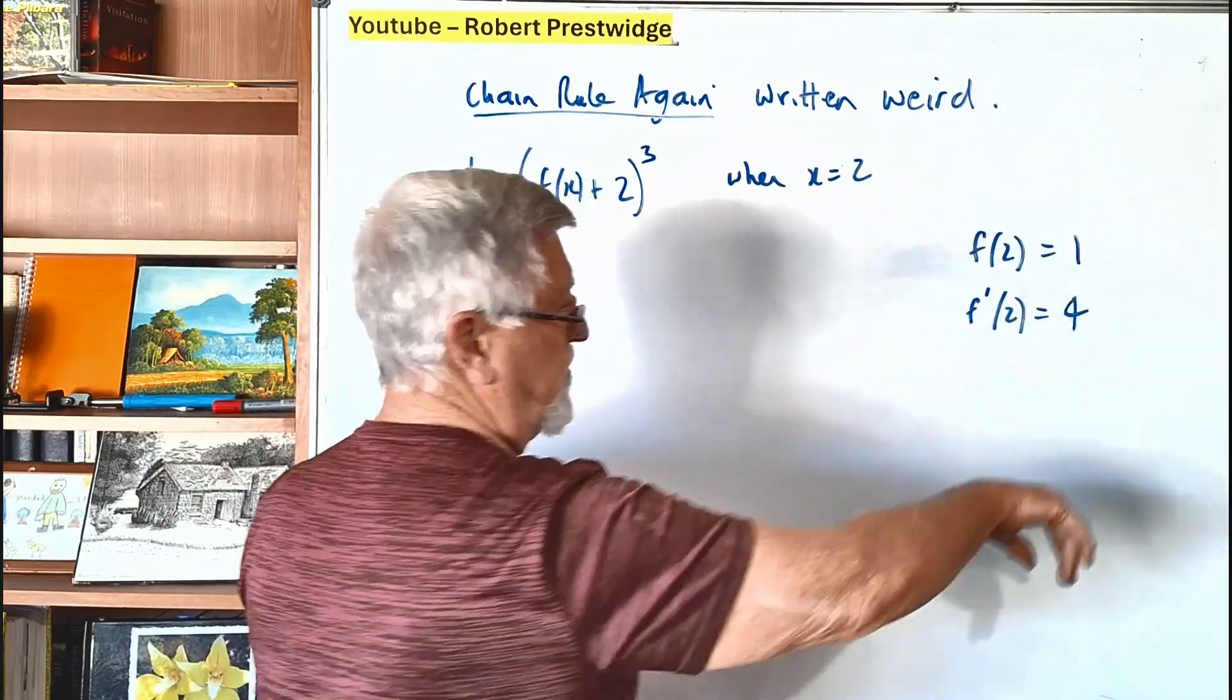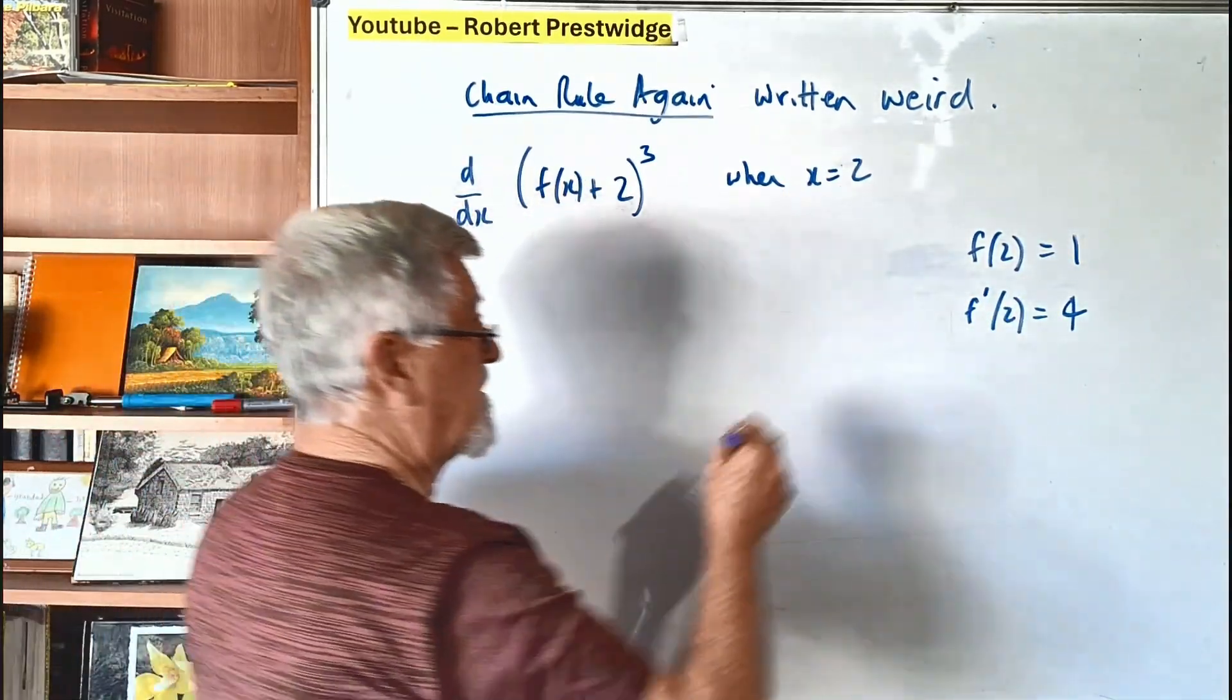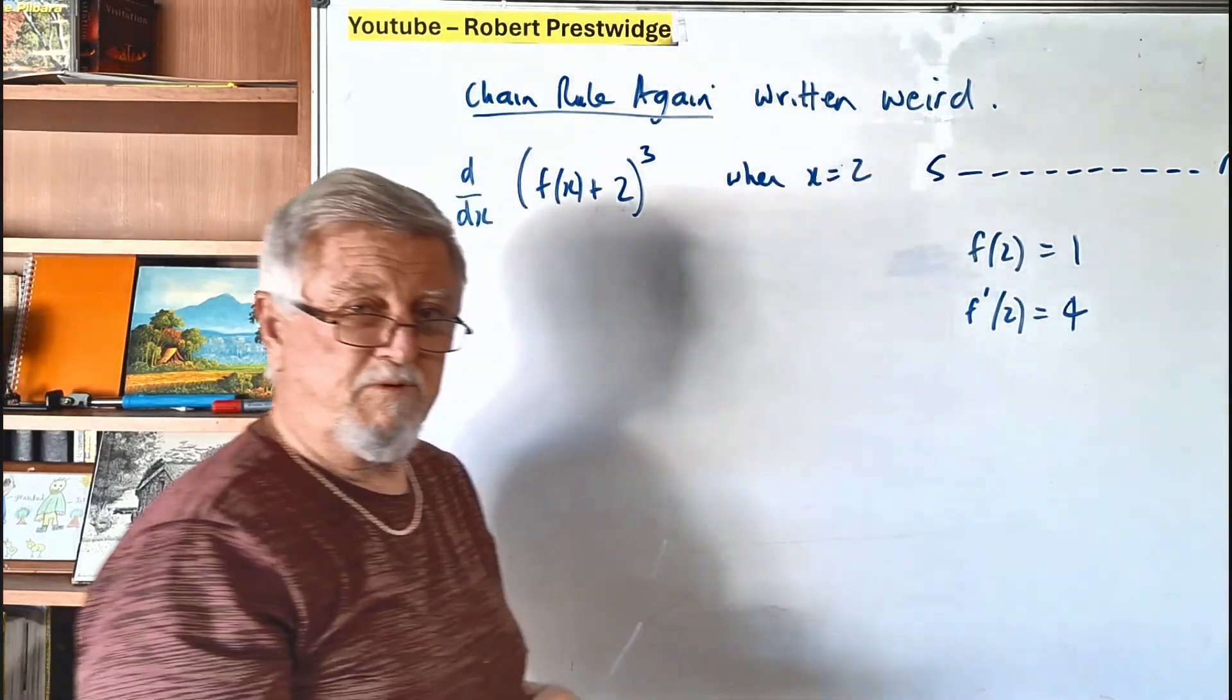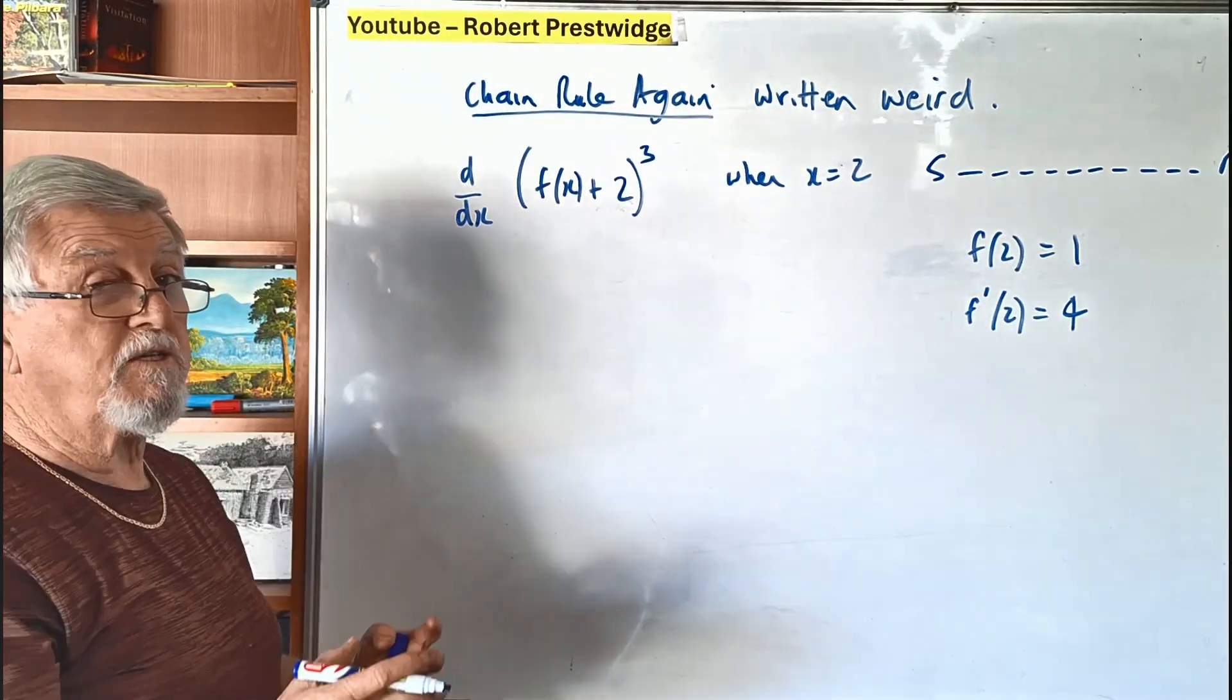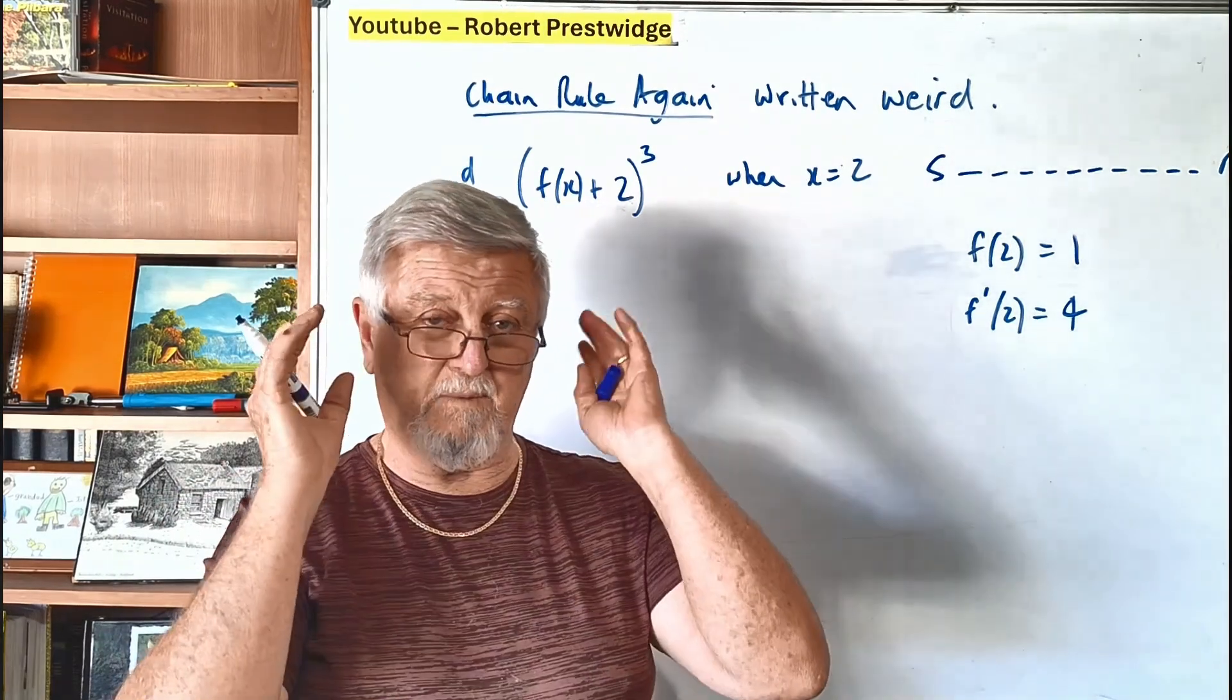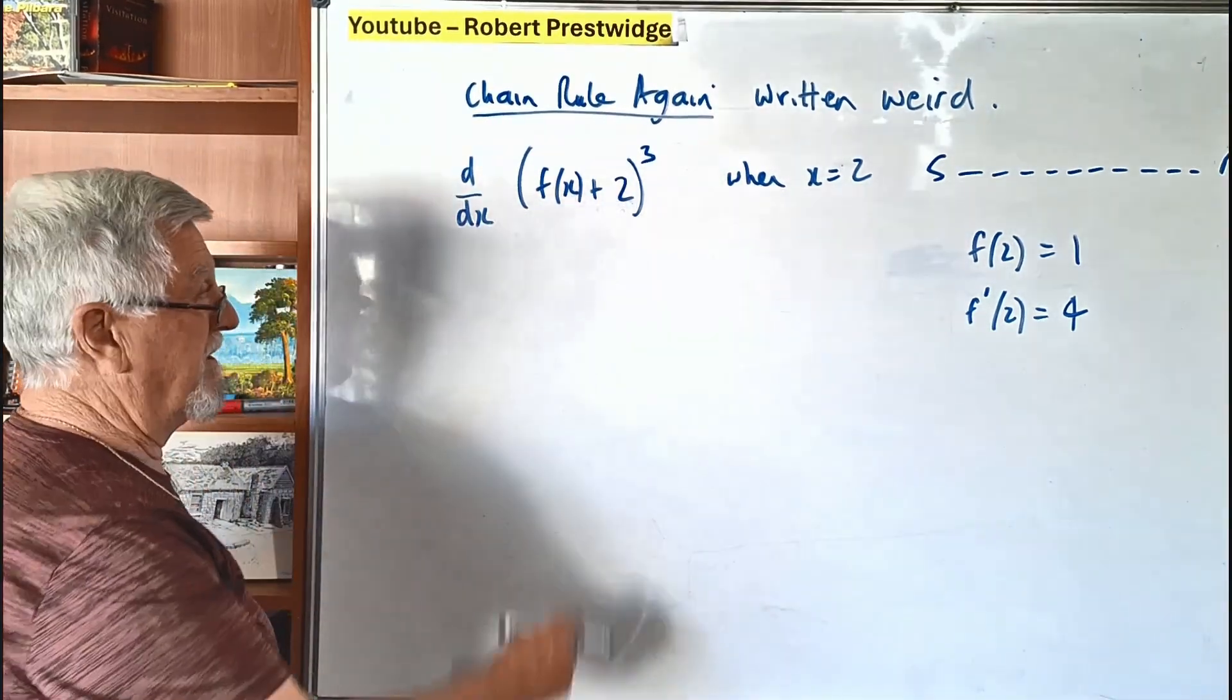Then of course they're going to say when x equals 2 and they're going to tell you the values. So we're going to come back to substitution all the time. Remember, all this is about substitution. No matter how they write it, no matter how they say it, it's still going to be chain rule and it's still going to be a substitution. So let's have a look at it.